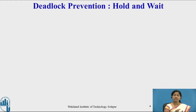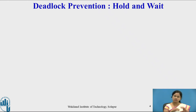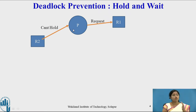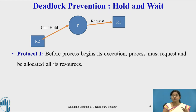The next condition is hold and wait. Hold and wait means a process is holding one resource and making a request for another resource. For deadlock prevention, this hold and wait situation should never occur in the system. As shown here, if process P wants to request resource R1, it cannot hold R2 — it has to release R2 first and then request R1. There are two different protocols to ensure hold and wait does not occur.